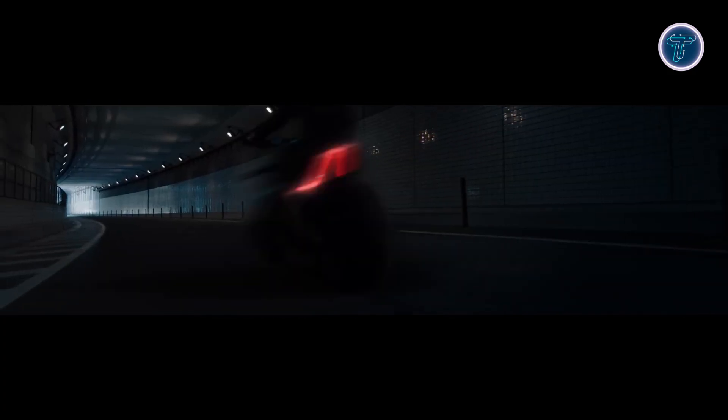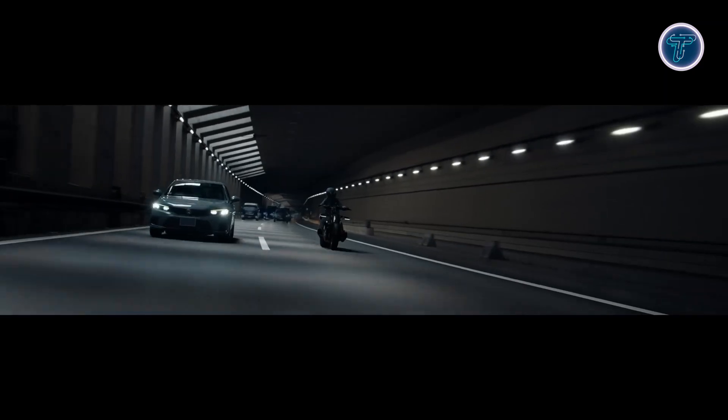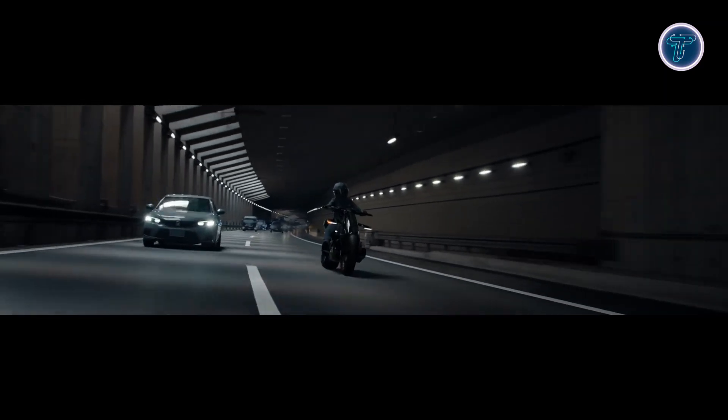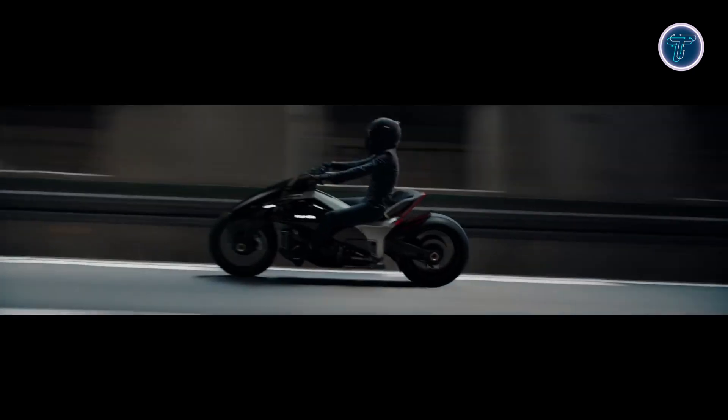Design-wise, the Outlier follows three pillars: gliding, emphasizing smooth silent EV motion; ecstasy, capturing instant torque thrills; and low, highlighting a compact, rider-centric posture. Semi-translucent body panels reveal parts of the internal structure, creating a futuristic, cyberpunk-inspired aesthetic.